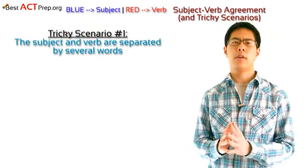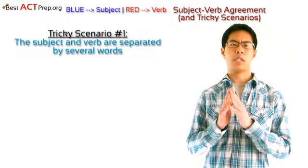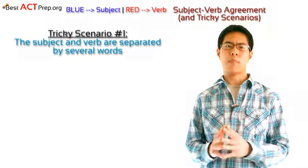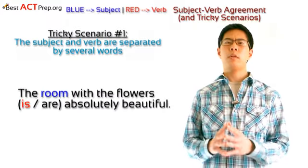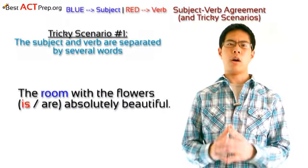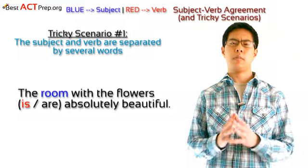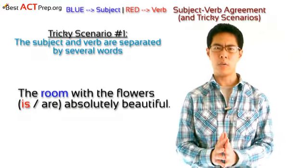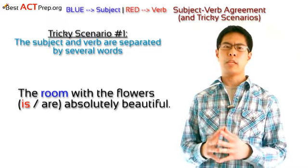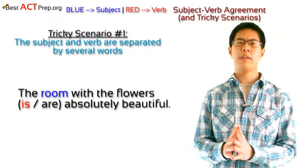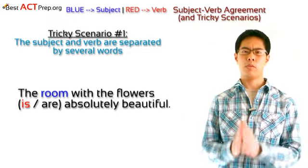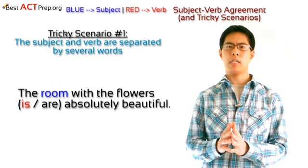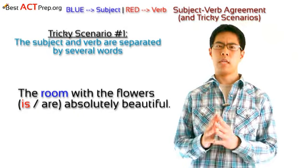Tricky scenario number one: the subject and the verb are separated by several words. Take a look at the following example: 'The room with the flowers is or are absolutely beautiful.' Here, if we're not careful, we might think that the subject is 'flowers,' which is plural and would match with the verb 'are.' However, the actual subject here is 'room,' which is the first noun in the subject phrase. Room is singular, so we should match with the singular verb 'is.'